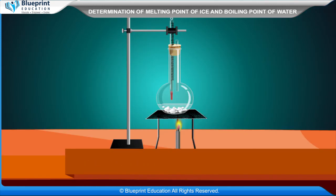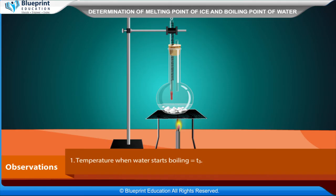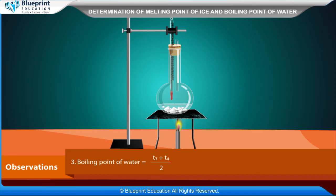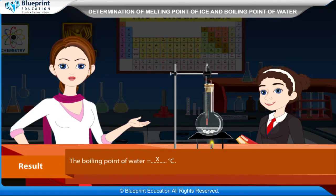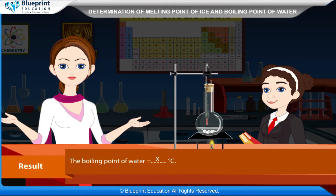Observation: temperature when water starts boiling is T3; temperature when water continues to boil is T4. The boiling point of water equals (T3 + T4) / 2. Result: the boiling point of water is equal to x degrees Celsius.